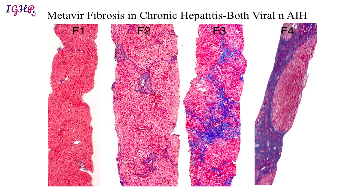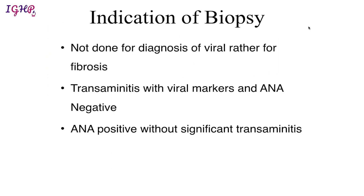As per Metavir, fibrosis is divided into four stages: F1 has thin fibrous septa in a few of the portal tracts; F2 has fibrous septa in most portal tracts; F3 has bridging fibrosis with multiple bridges; and F4 is characterized by the formation of cirrhosis.